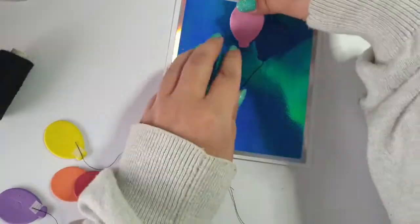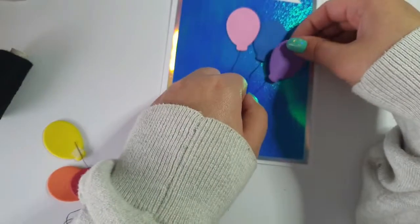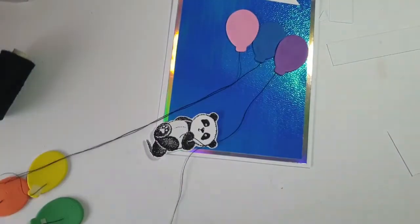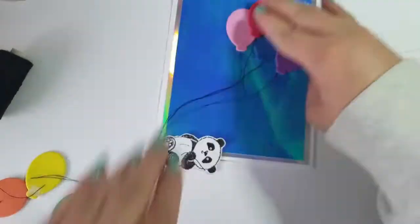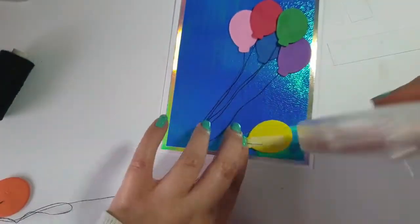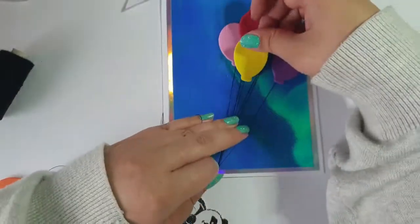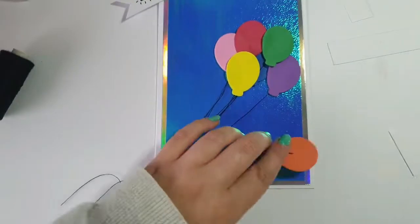Then I started placing down all of the balloons. I tried to make sure that the tape I put on the back of each foam balloon went over the thread as well, just because then I thought it would hold it in place a little bit better. I do move these quite a lot. I try to make it nice and colorful as well because it is a birthday card after all.